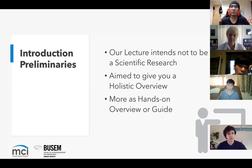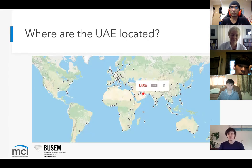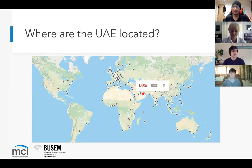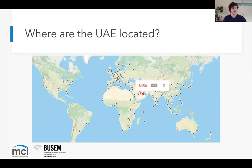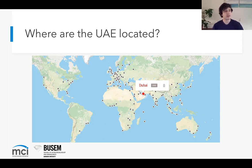First, let's talk about where the UAE is located. We've chosen a map which shows all destination points and flight route points that can be directly accessed from Dubai's DXB airport using Emirates. As you can see, that's a whole lot of destinations, and this will be a very critical aspect of this presentation — why the UAE as a whole is so interesting, because look at the location and how it is essentially in the center of any major destination.